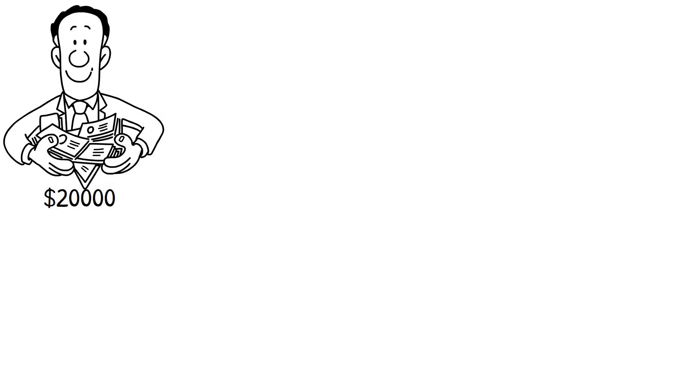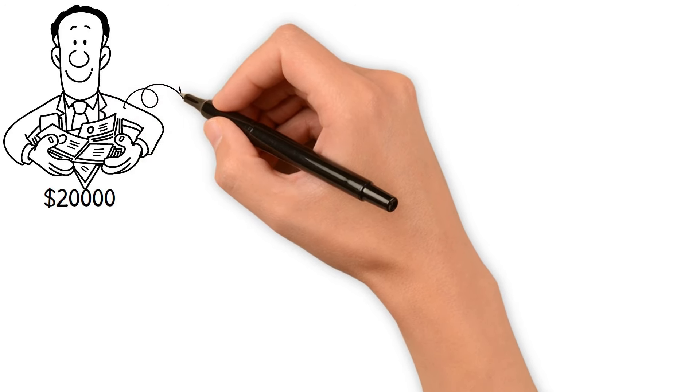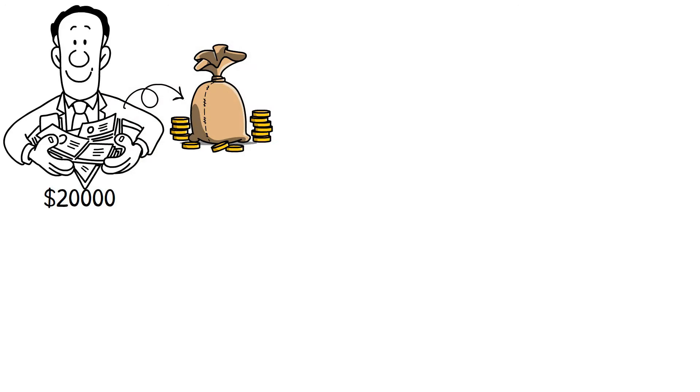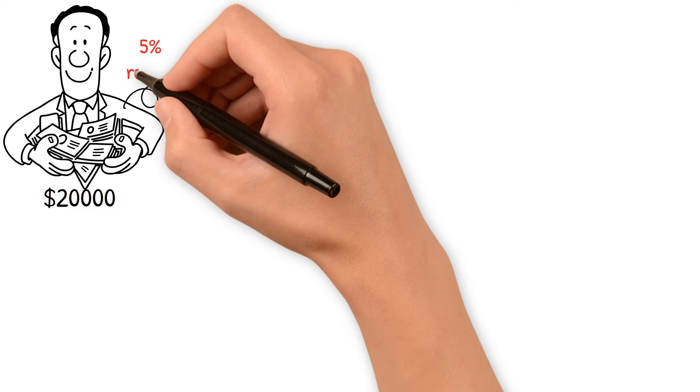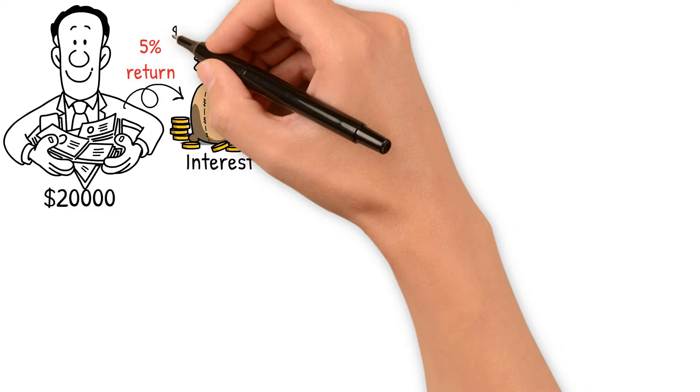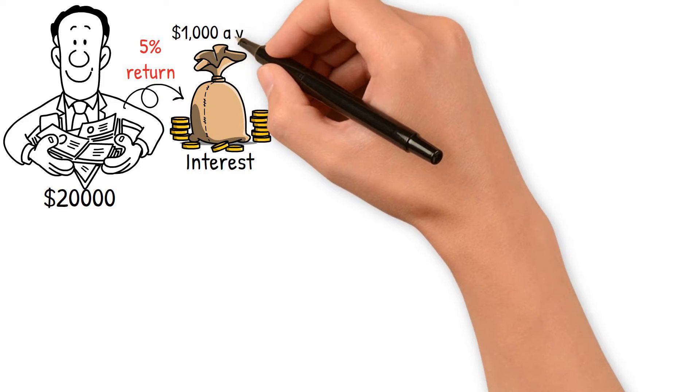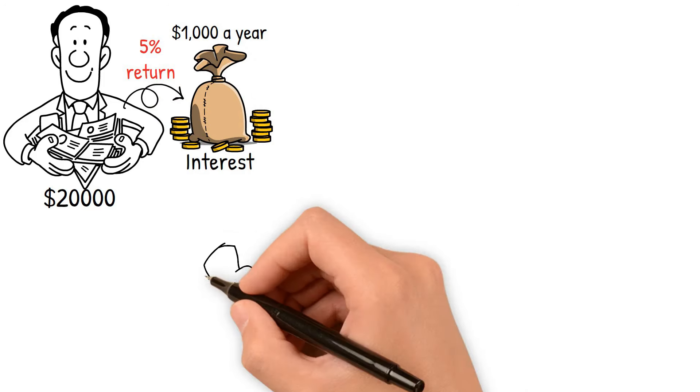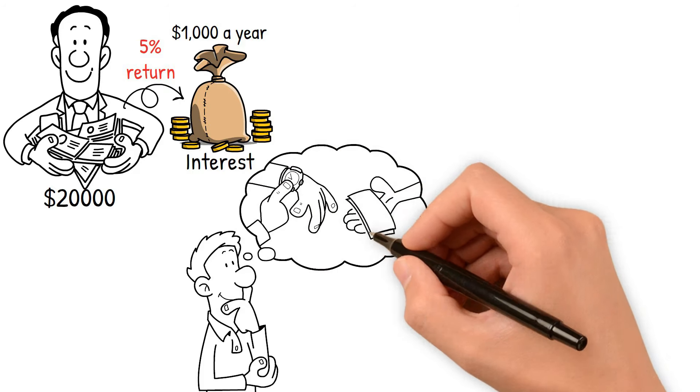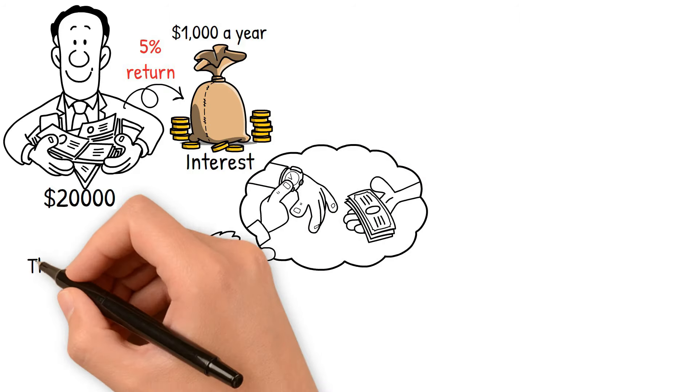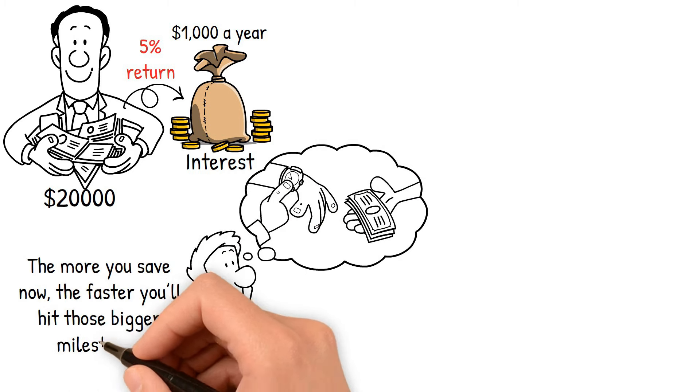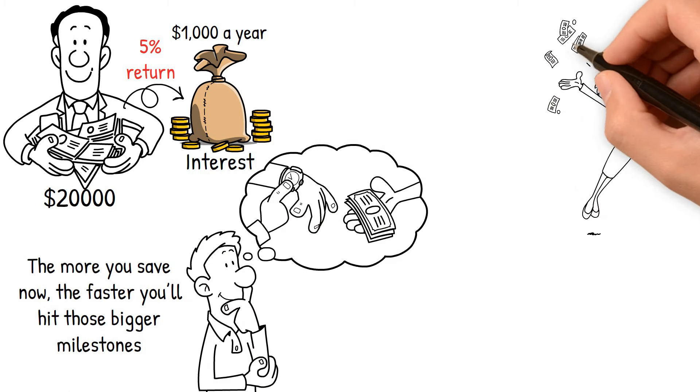By the time you've accumulated $20,000, the interest or returns on your savings will start to match what you're putting away each year. So if you've got $20,000 saved up and are earning that same 5% return, you're looking at $1,000 a year just from interest without any extra effort. This is why staying consistent with your savings in the early stages is so important. The more you save now, the faster you'll hit those bigger milestones and the more your money will start working for you instead of the other way around.